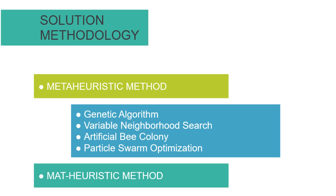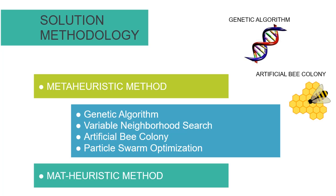The meta-heuristic method produces high-quality solutions in a reasonable time. This method is effective and suitable as the difficulty of our problem increases with the number of customers. Examples include genetic algorithm and artificial bee colony. Another option is math-heuristic, which is the combination of exact and meta-heuristic methods.